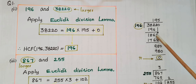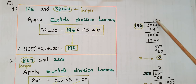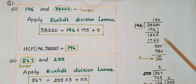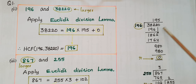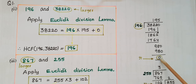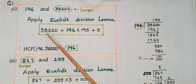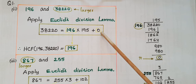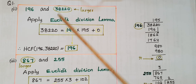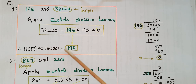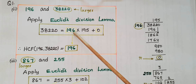Bringing down digits: 186, then bring down 2 giving 1862, then bring down 0 giving 980. 196 fives are 980, so the remainder is 0. Therefore 38220 is equal to 196 into 195 plus 0. The HCF of 196 and 38220 is equal to the divisor, which is 196.